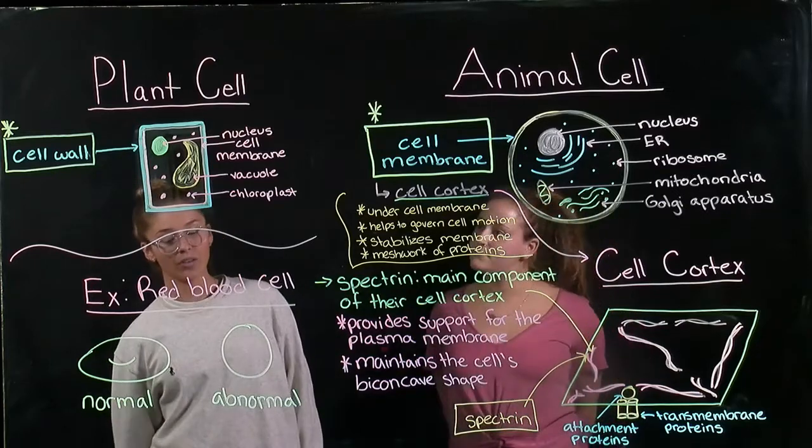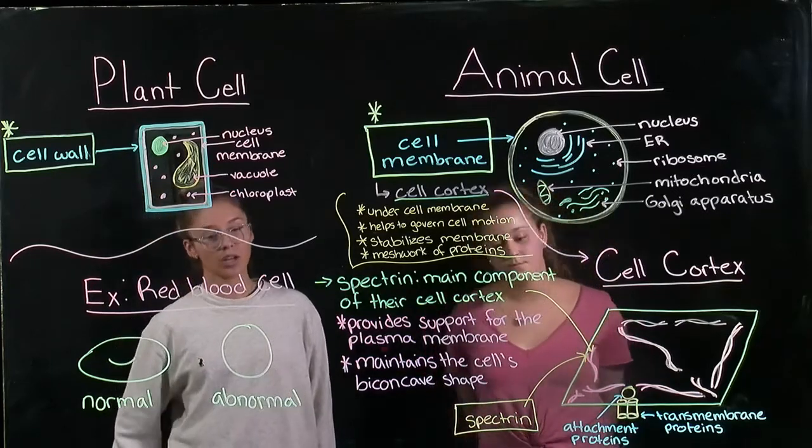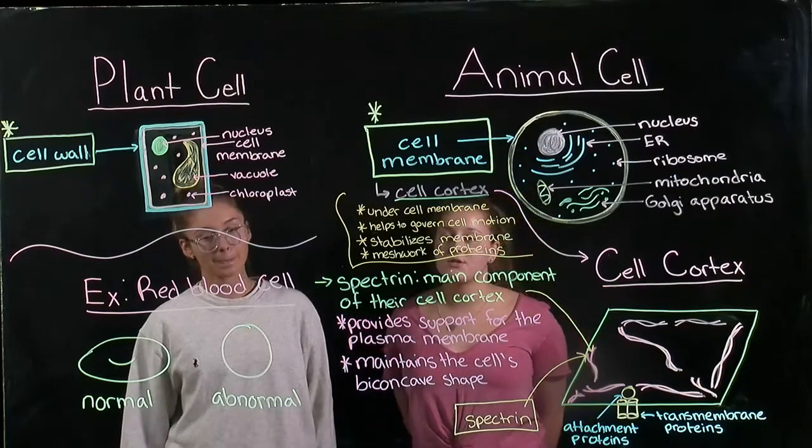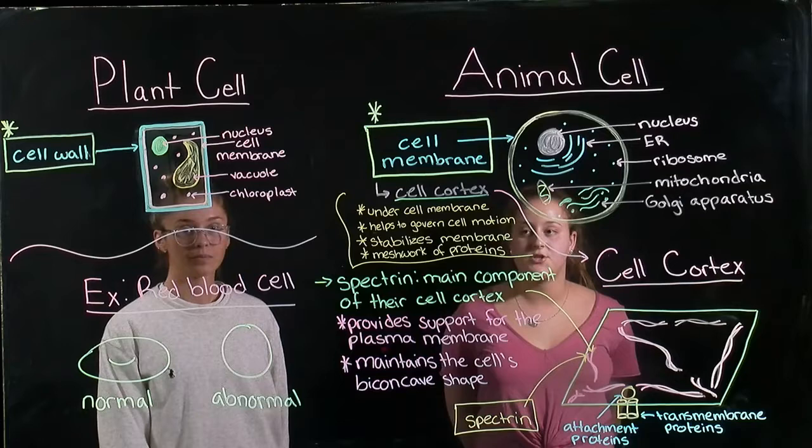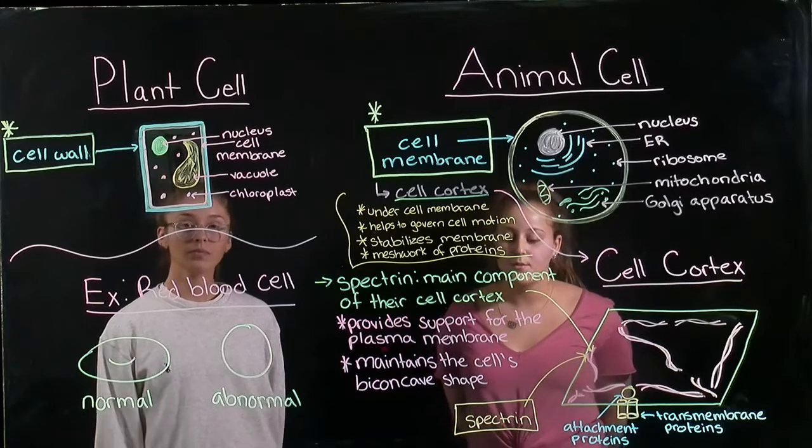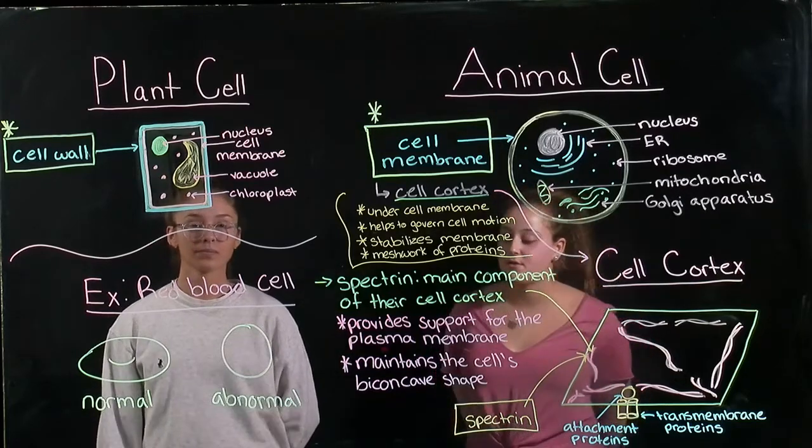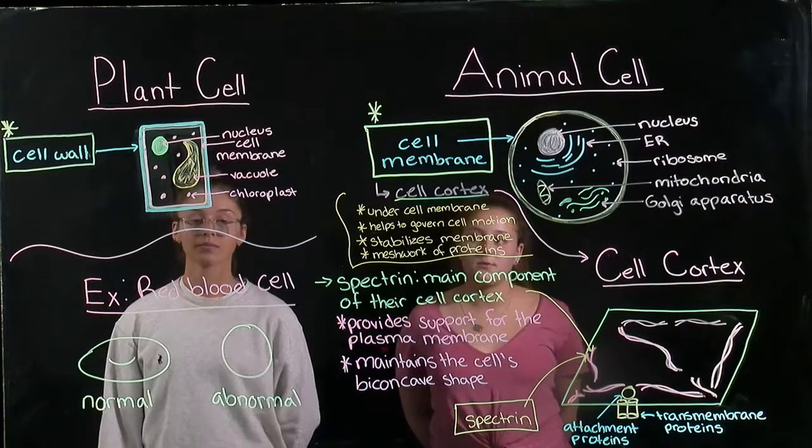This is an example of how the cell cortex governs cell motion. Other cells also use their cell cortex to selectively take up materials from their environment, to change their shape, and to move. Proteins similar to spectrin are present in the cortex of most animal cells.